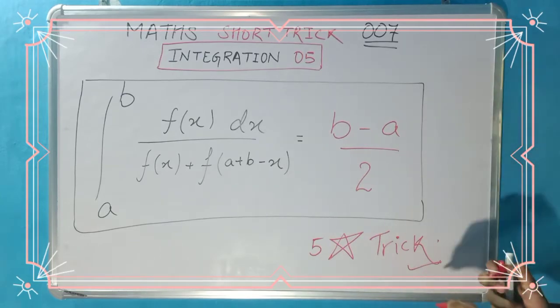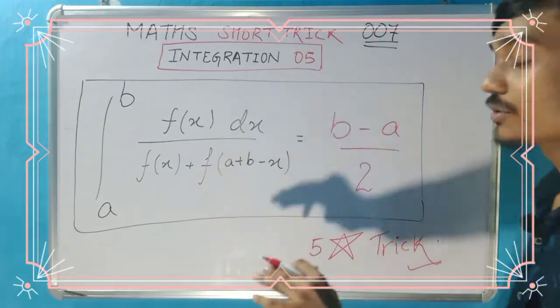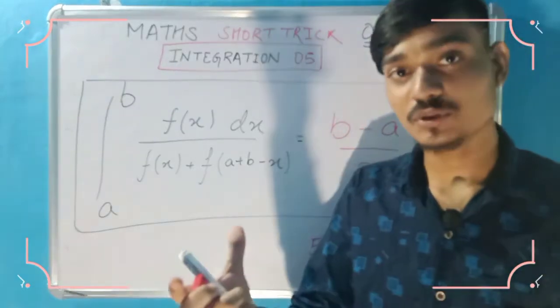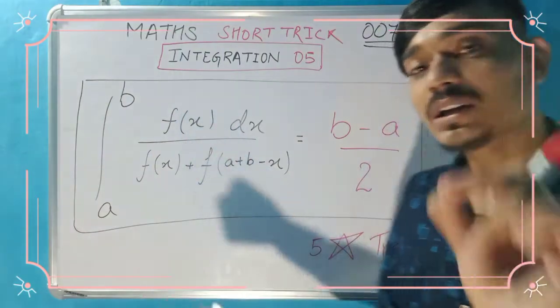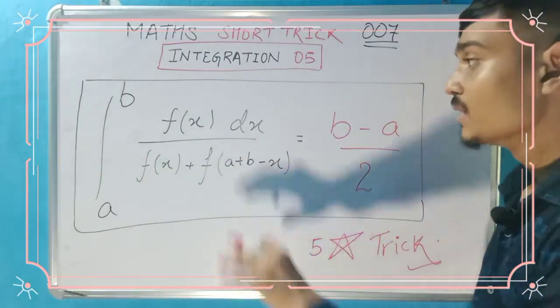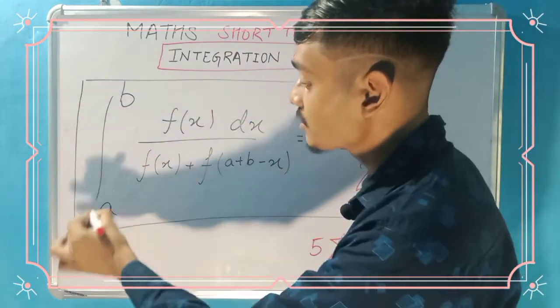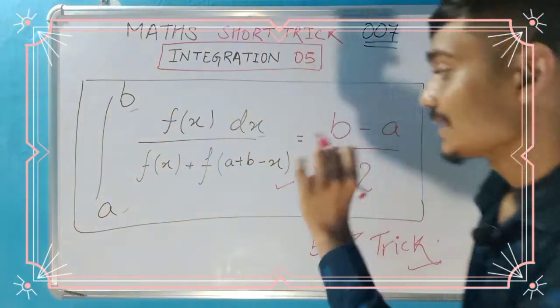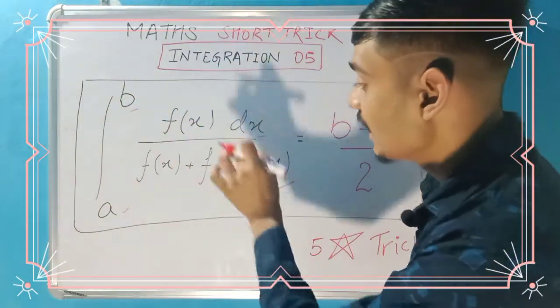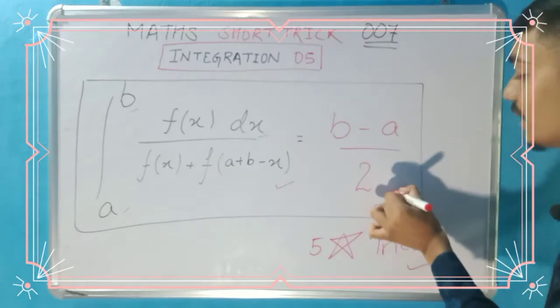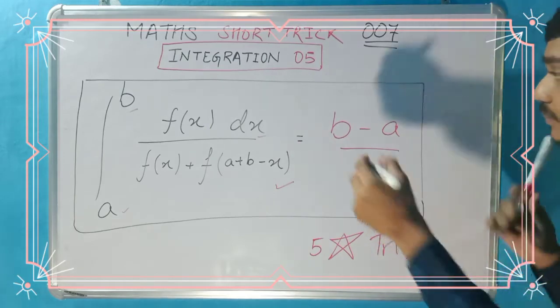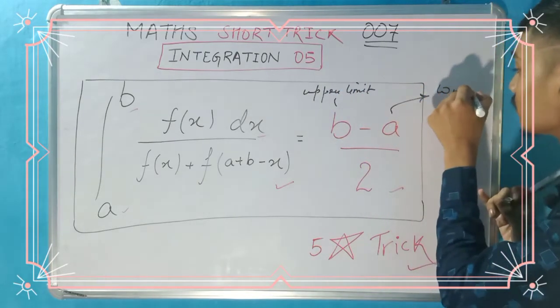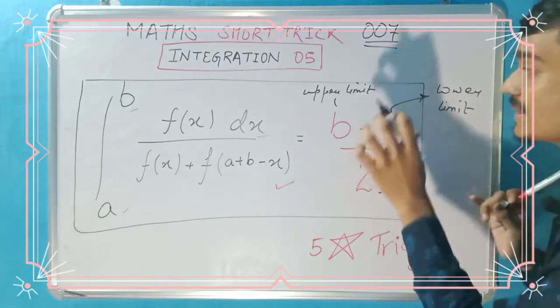Focus on this video. This is our short trick and this is called a five star trick. The formula is: integral from a to b of f(x) dx divided by f(x) plus f(a+b-x). See the pattern: f(x) divided by f(x) plus f(a+b-x) equals (b-a)/2, which means upper limit minus lower limit divided by 2 gives the answer of this integral.